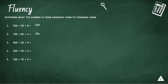Number 3. 900 plus 30 plus 9 equals 939. Number 4. 300 plus 50 plus 2 equals 352.